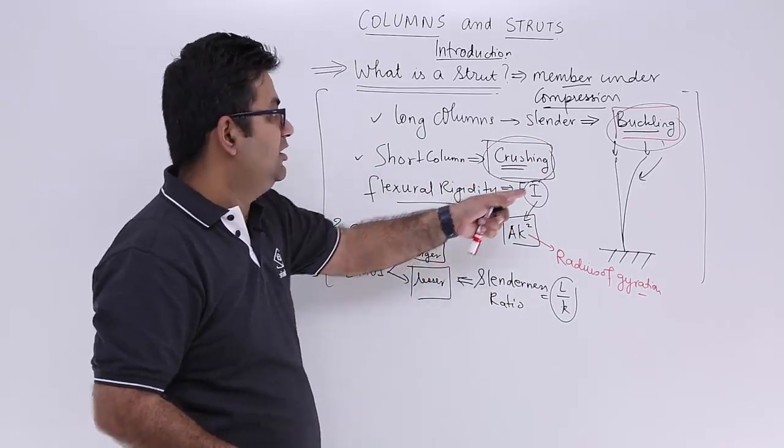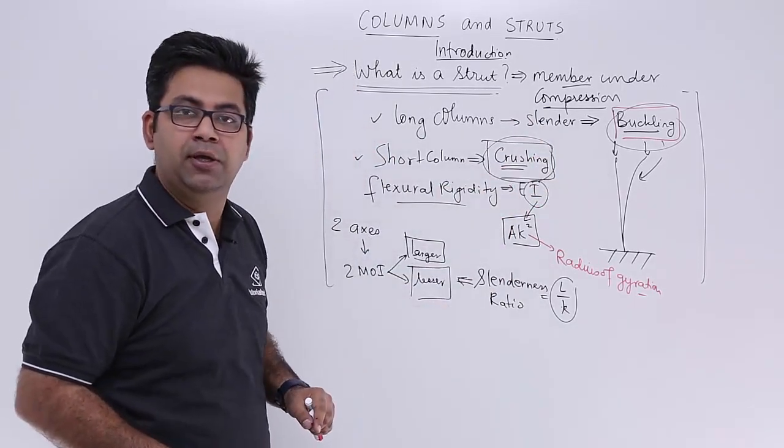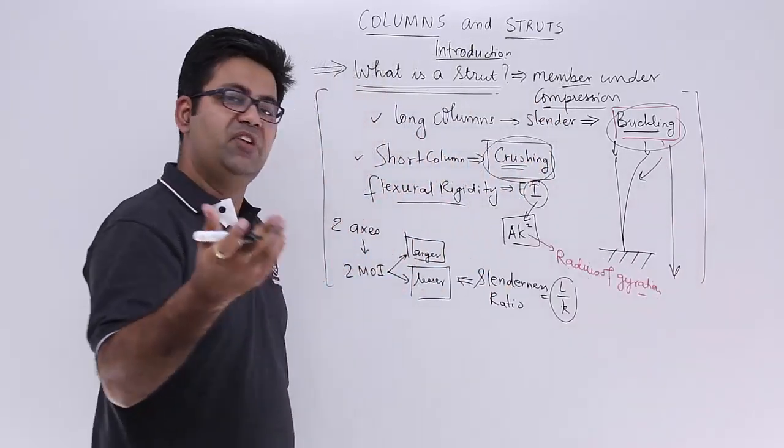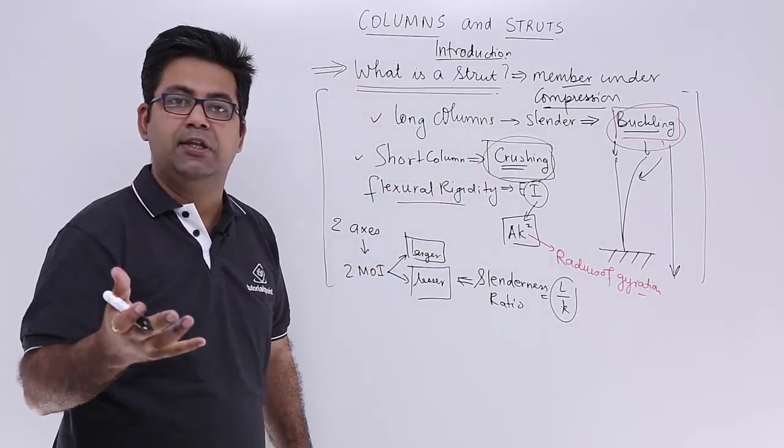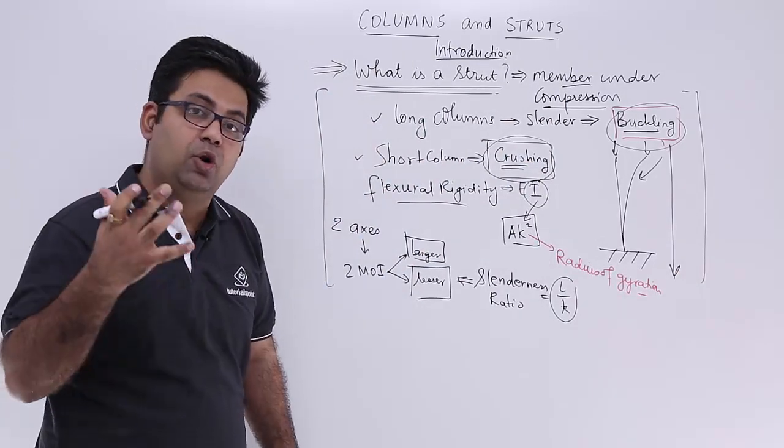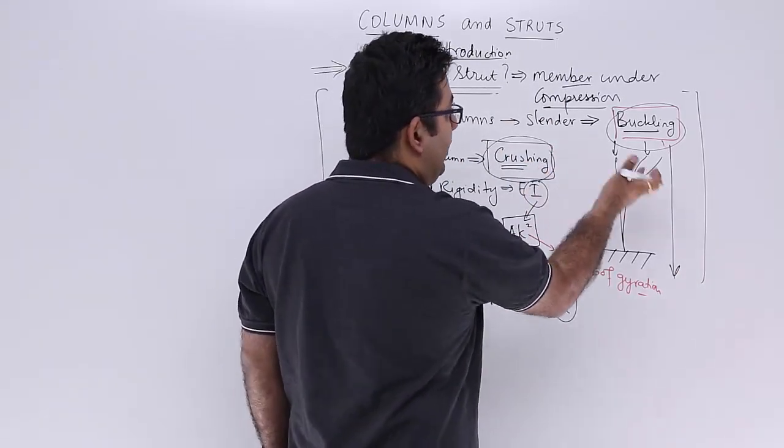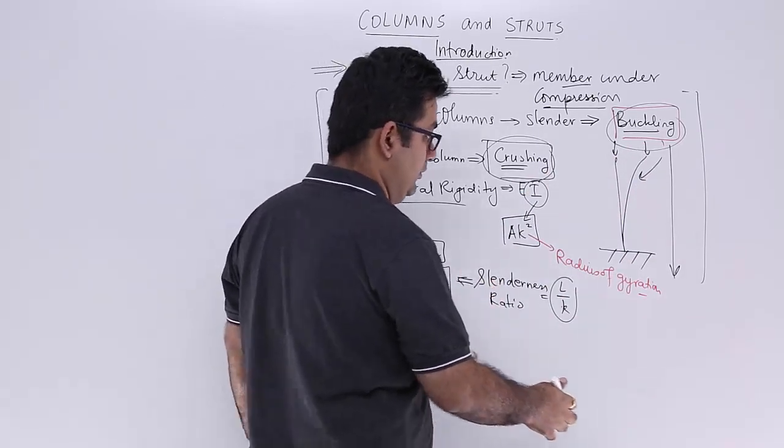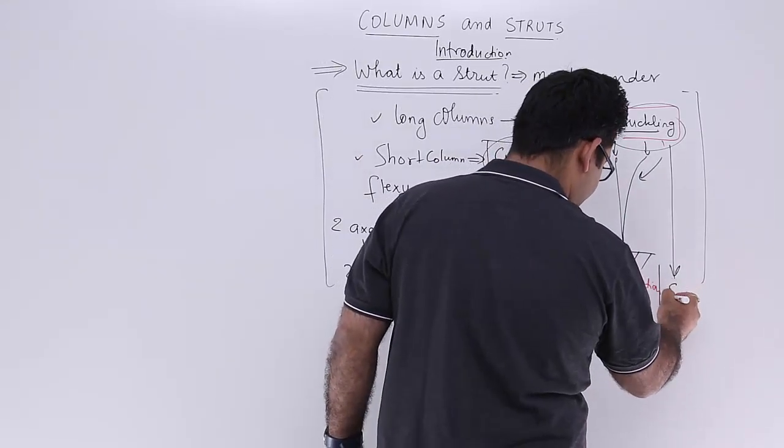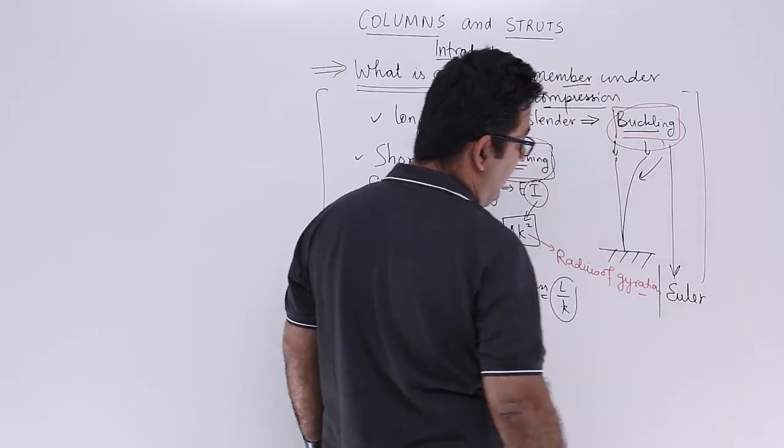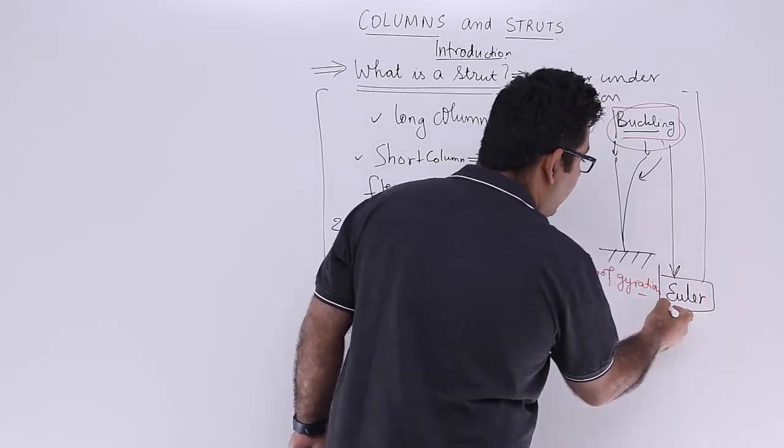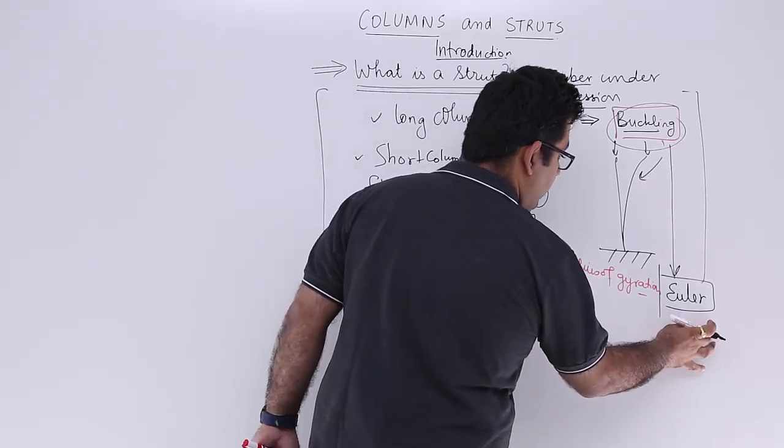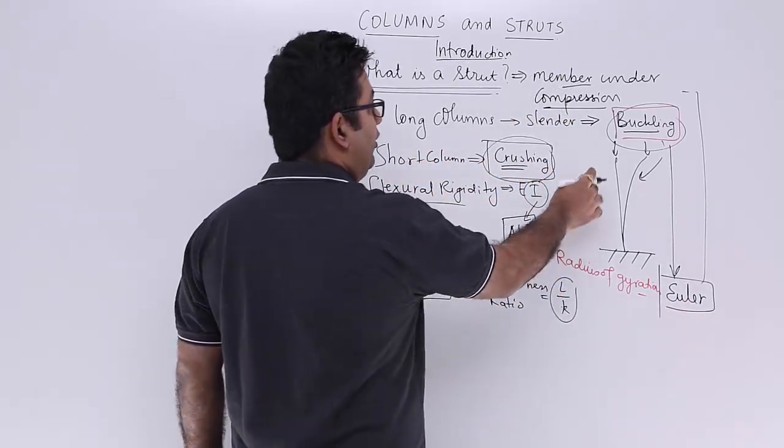The mathematical theory which governs the buckling load—the load at which the buckling actually takes place and your column material fails—is called buckling load. That is governed by a theory which was given by Euler, so Euler column theory is what we are going to talk about in this particular video series.